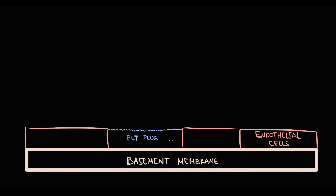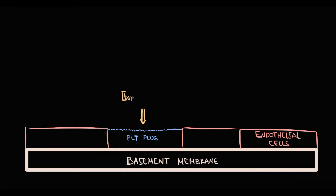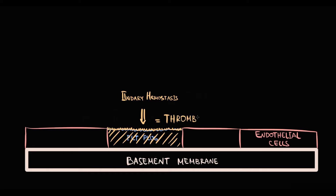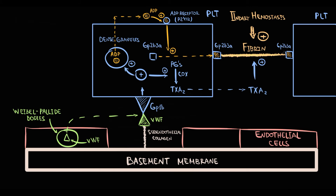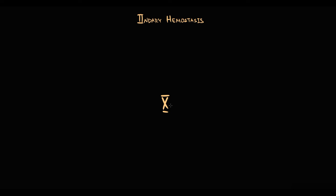The platelet plug is weak, and to stabilize it we have secondary hemostasis. Secondary hemostasis converts the weak platelet plug into a formidable structure called a thrombus by converting unstable fibrinogen into stable fibrin. Secondary hemostasis is provided by coagulation factors forming the coagulation cascade. The central factor of the coagulation cascade is factor X, and the goal of both intrinsic and extrinsic pathways is to activate factor X.